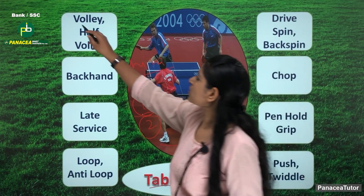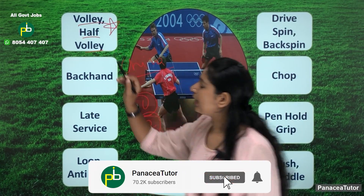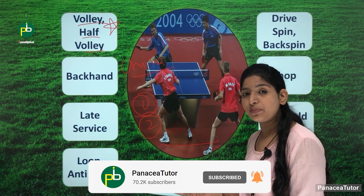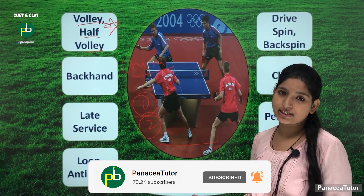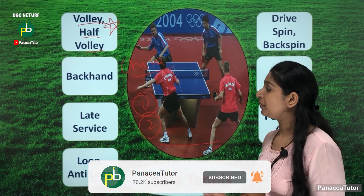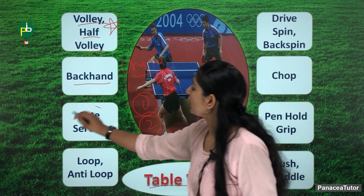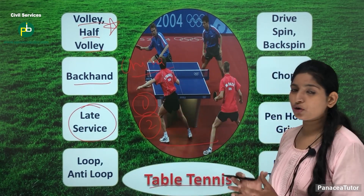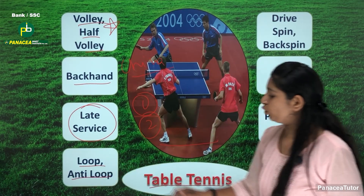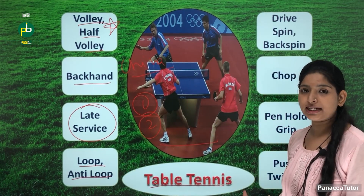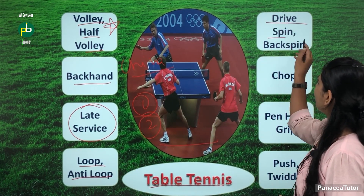We will see some important terms. First is volley and half volley — this is important and associated with table tennis. Lawn tennis is also associated with the term volley. Then backhand, late service — late service is when you miss any chance. Next is loop and anti-loop, associated with table tennis.